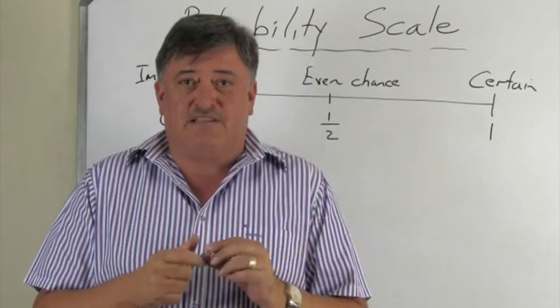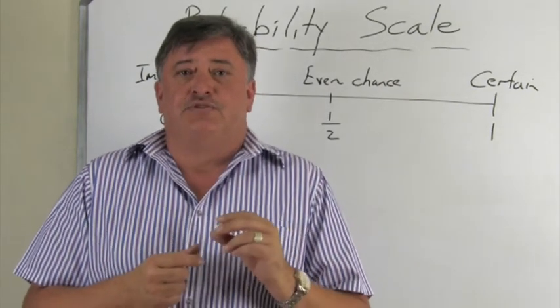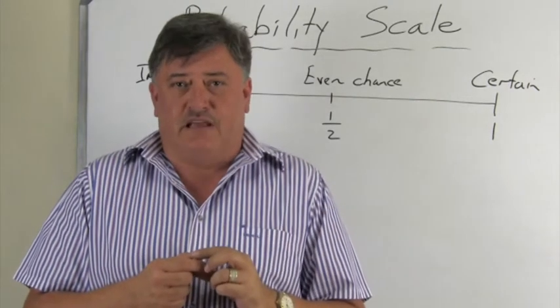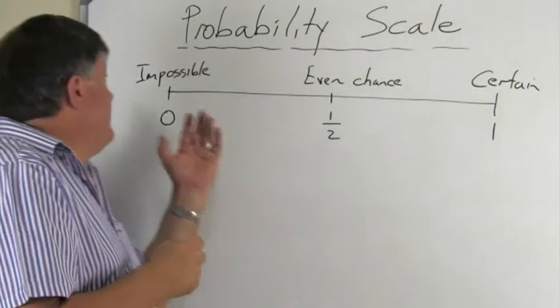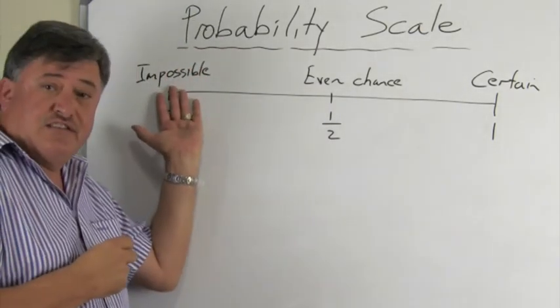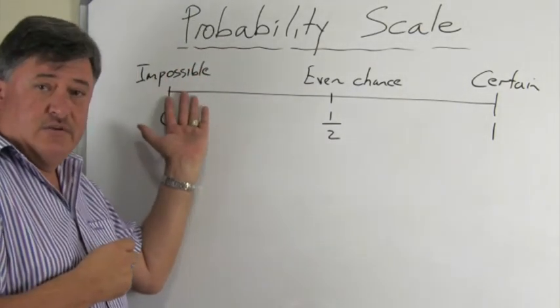So the probability when rolling a die to get a seven is therefore zero, because we can't get it. And that is what we refer to as an impossible event or impossible probability.